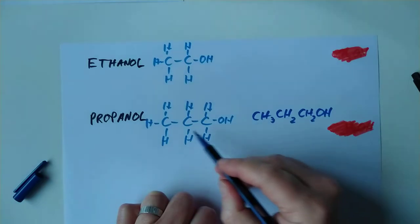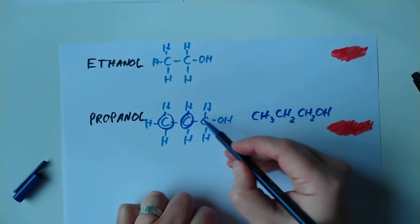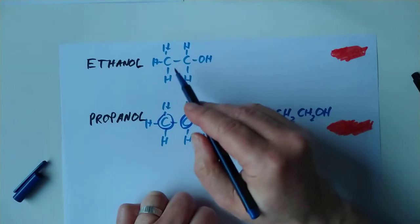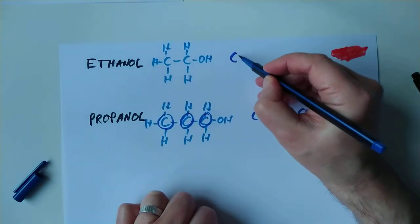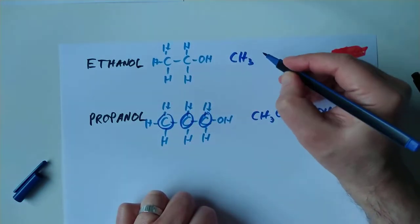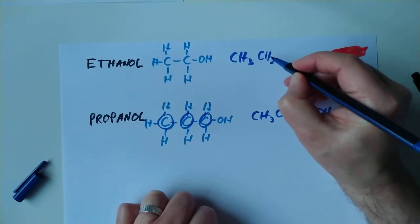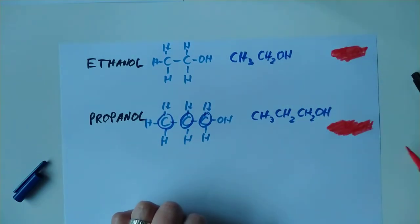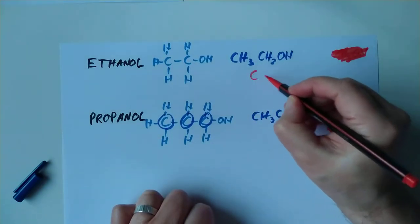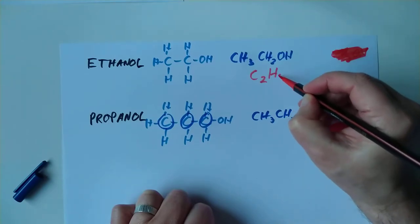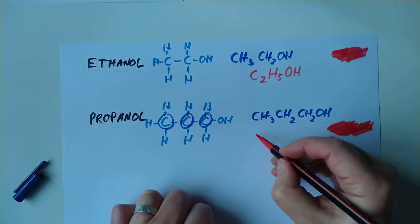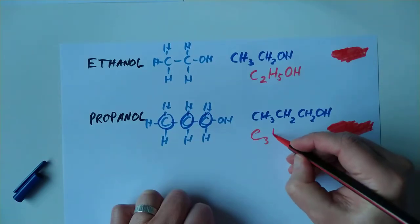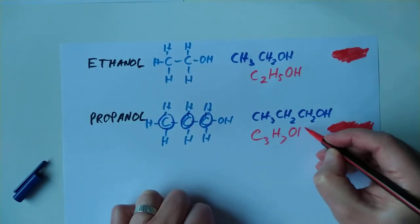So CH3, CH2, CH2OH. We can have the shortened version of this, which is CH3 and then CH2OH. Or you can have the molecular formula in red, which is C2H5OH. This one here is C3H7OH.